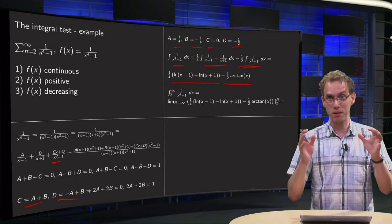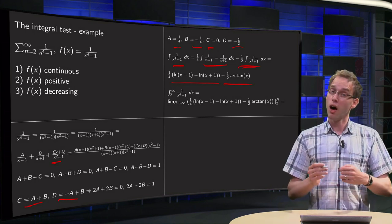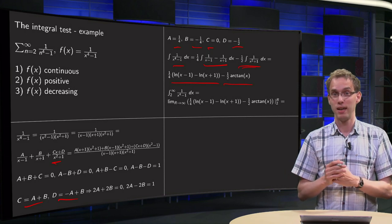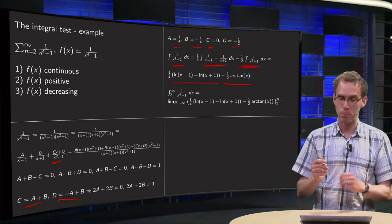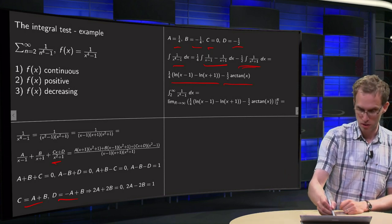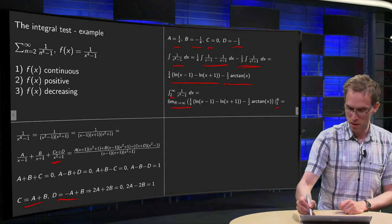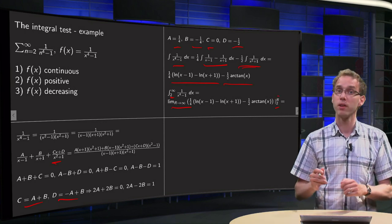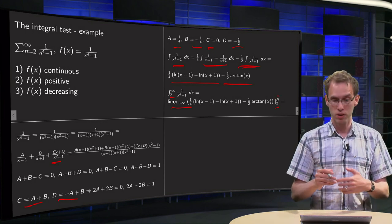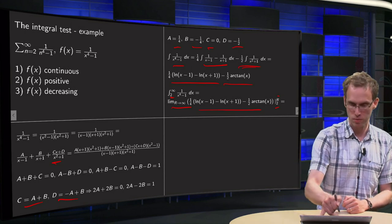Now the last big step: compute the improper integral. We integrate from 2 to infinity, which means we take the limit as r → ∞ of the integral from 2 to r of our antiderivative.